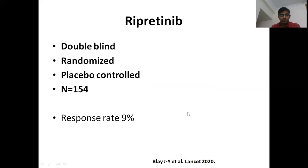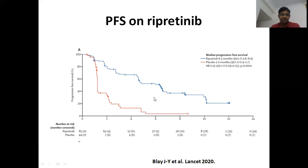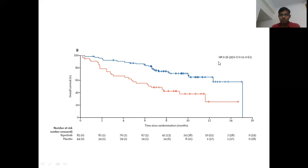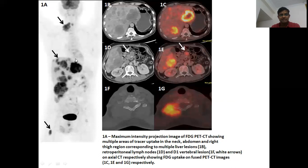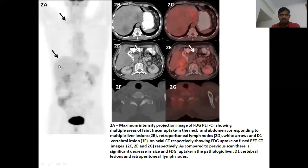Ripretinib was approved as a fourth-line drug after imatinib, sunitinib, and regorafenib. The response rate is 9% based on the Invictus trial — a small trial without a control arm, for which it was criticized. However, progression-free survival in the fourth-line setting is impressive: 6.3 months versus 1 month, potentially better than sunitinib or regorafenib, which is why it is now being pushed into second or third-line settings. The overall survival hazard ratio of 0.36 is notable. One of our patients had cervical metastasis, extensive liver metastasis, abdominal disease, and bony metastasis — showing great activity after three months on ripretinib.